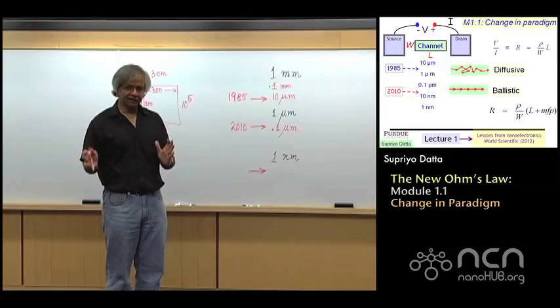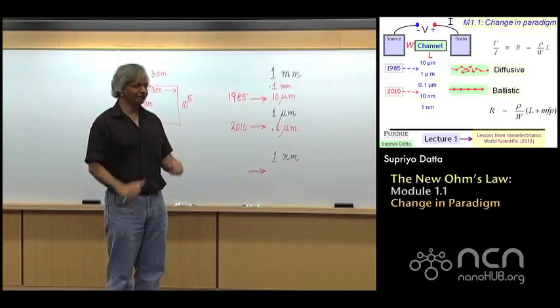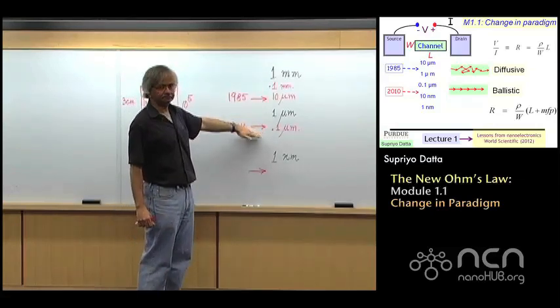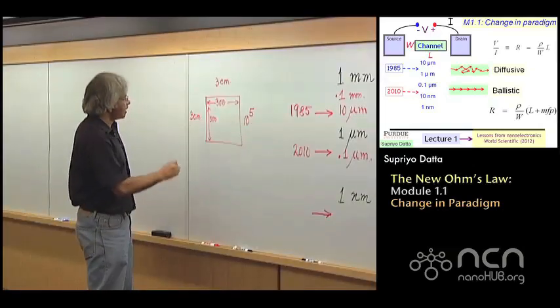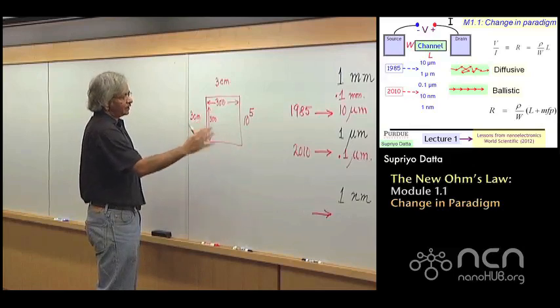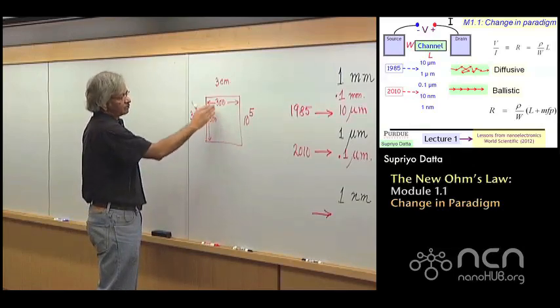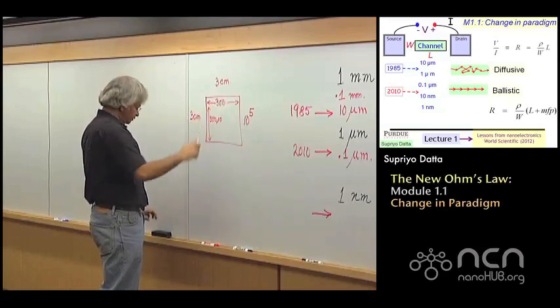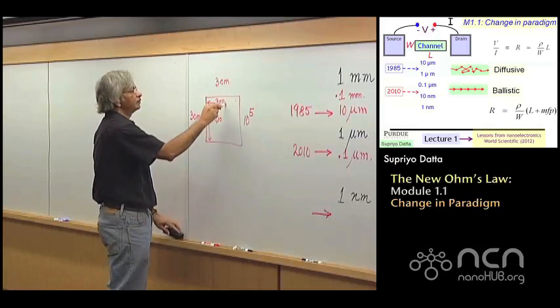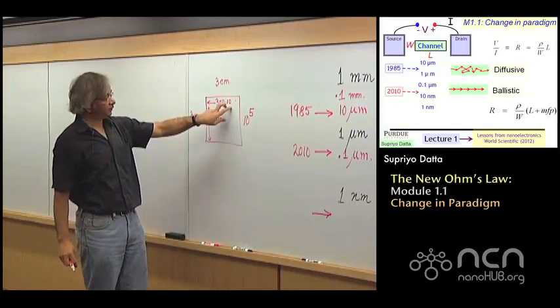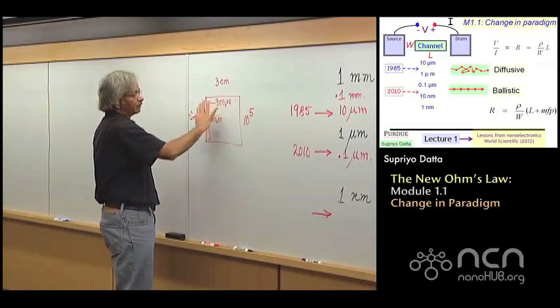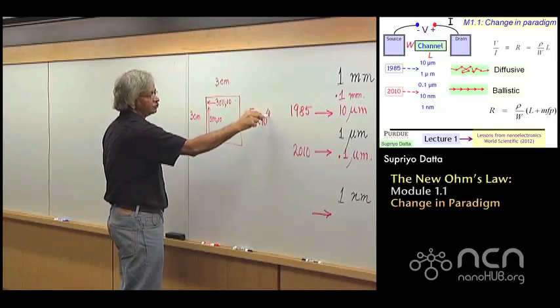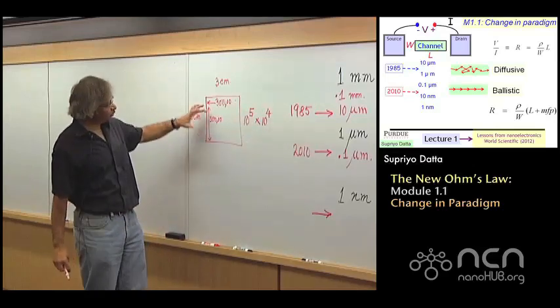That's roughly where things stood back in 1985. You would have about 100,000 transistors in there. Sounds like a pretty big number, except that looking back, that looks like a very small number. The reason is that today, everything is like a factor of 100 smaller. So it's like you can fit in 100 times more each way. So instead of just 300, it's more like 30,000 this way.